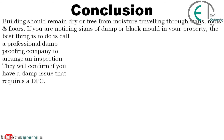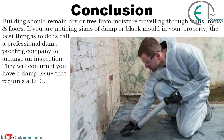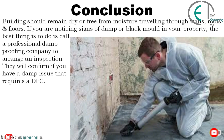Condensation mold growth can occur in areas with limited airflow, such as behind furniture. Buildings should remain dry and free from moisture traveling through walls, roofs, and floors. If you are noticing signs of damp or black mold in your property, the best thing to do is call a professional damp proofing company to arrange an inspection — they will confirm if you have a damp issue that requires a DPC.